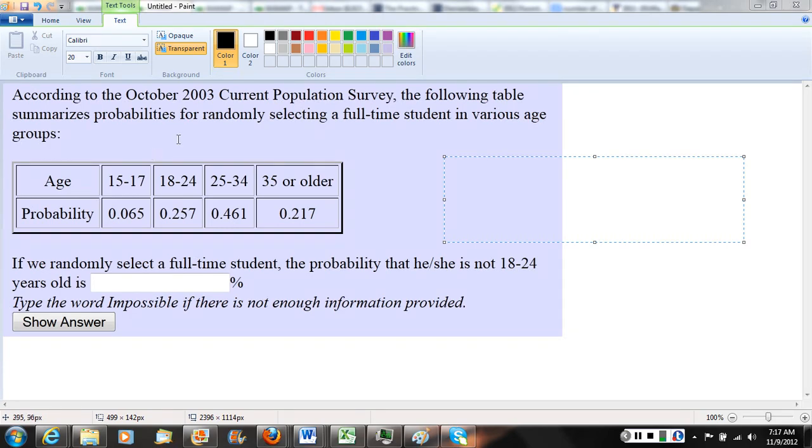So if you randomly select a full-time student from the population, if we want to think about these in percents, we could say about 21.7% were 35 or older, 46.1% were between 25 and 34, 25.7% were between 18 and 24, and about 6.5% were between 15 and 17.